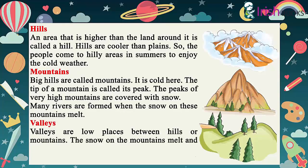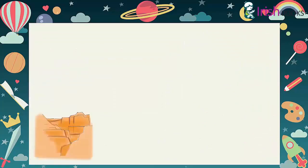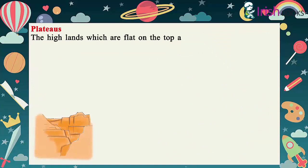Valleys are low places between hills or mountains. The snow on the mountains melts and flows down into the valley. Valleys have thick forests and crops also grow very easily here.